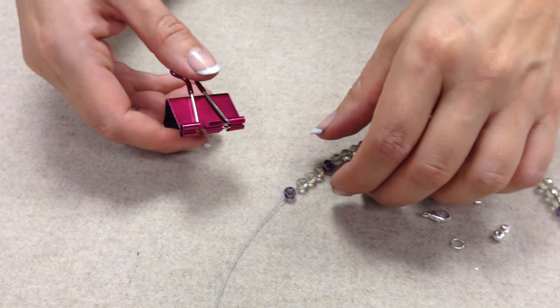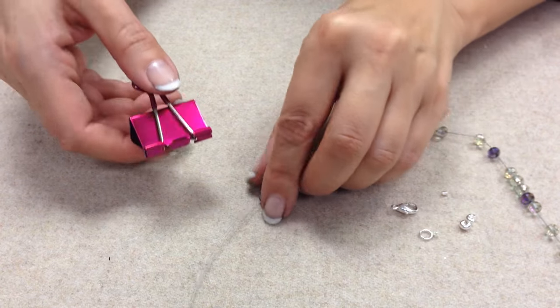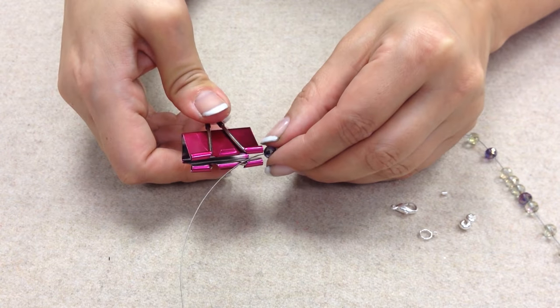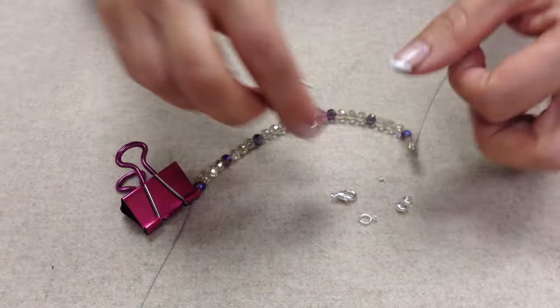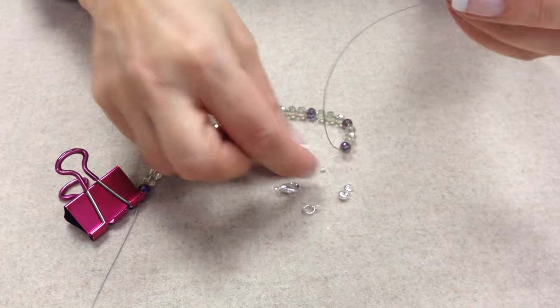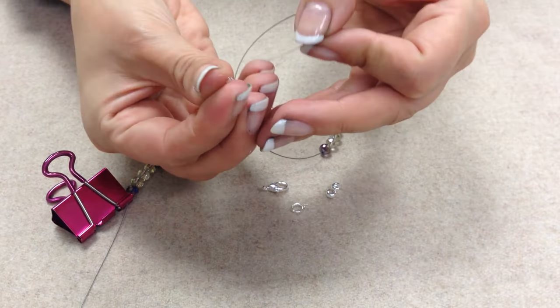Thread your beads onto stringing wire and place a bulldog clip at the end of the wire. This stops your beads from rolling off while you're attaching a clasp at one end.